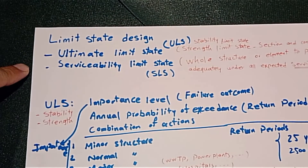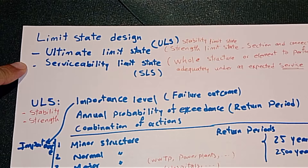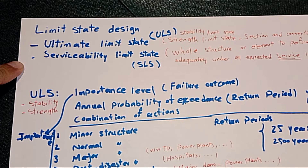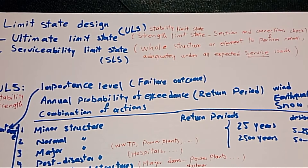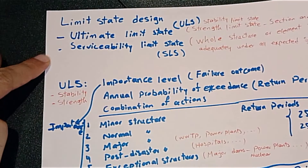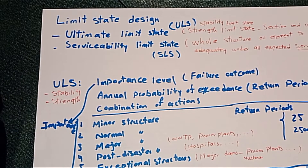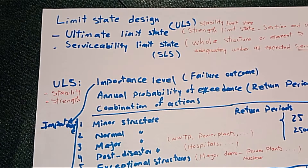For ultimate limit state design, first we're going to have the design life of the structure and the importance of the structure, which is based on the failure outcome — how big is the failure effect. We also consider the annual probability of exceedance of the effect, like earthquake, wind, or snow, and the return period of the action. Finally, we have the combination of actions: in ultimate limit state we normally apply increasing factors on loads, then check against the reduced capacity of the structure — the reduced capacity of sections for beams, columns, slabs, walls, and any other element.